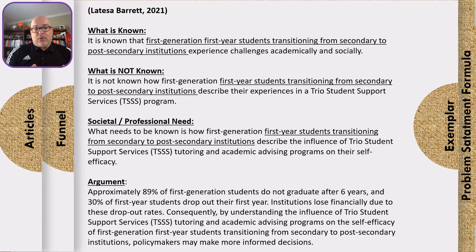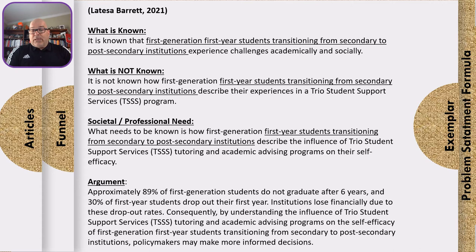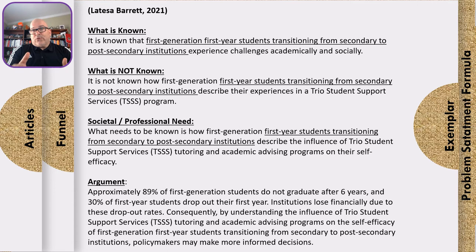Finally, we bring it all together in the argument, drawing on data from various sources. Approximately 89 percent of first-generation students do not graduate after six years, and 30 percent of first-year students drop out in their first year. That's compelling. She also adds that institutions lose financially due to these dropout rates. If we know how these students perceive the influence of TRIO support services on their self-efficacy, we may bring value to decision makers and policy makers to better serve students and build more financially stable institutions.